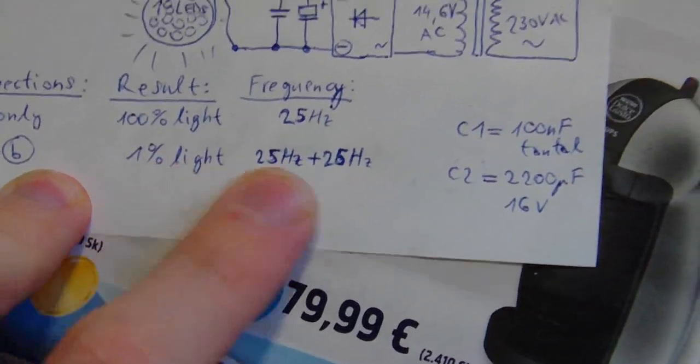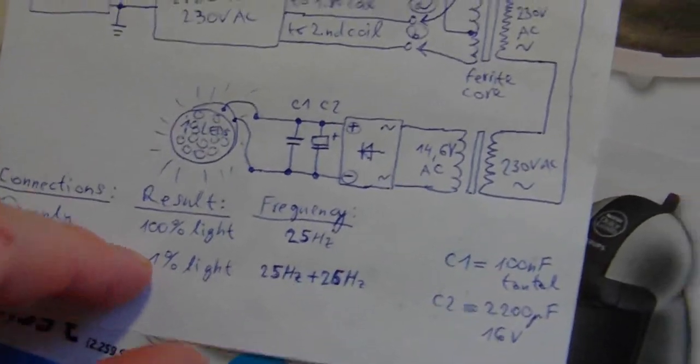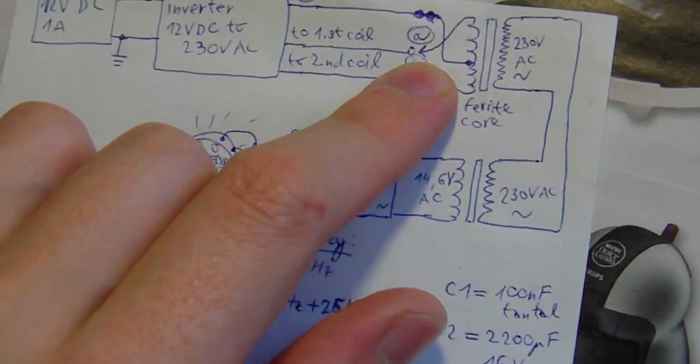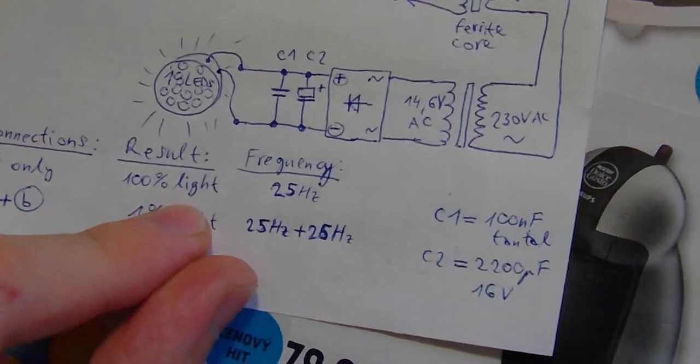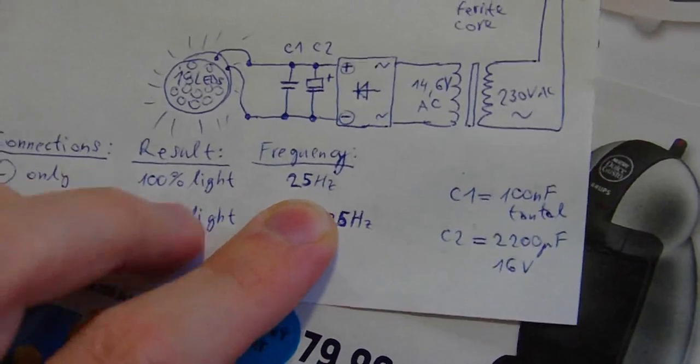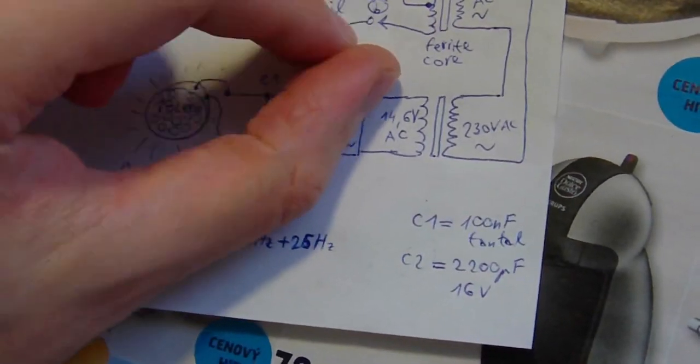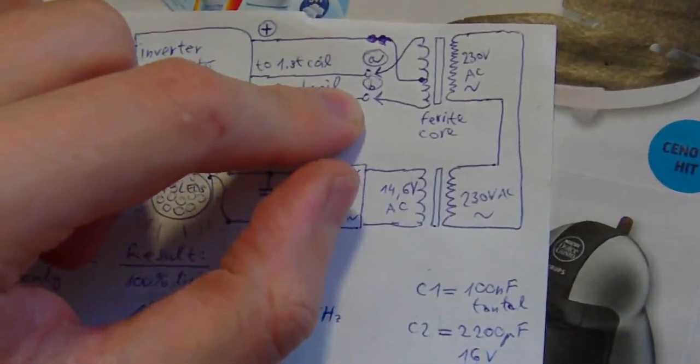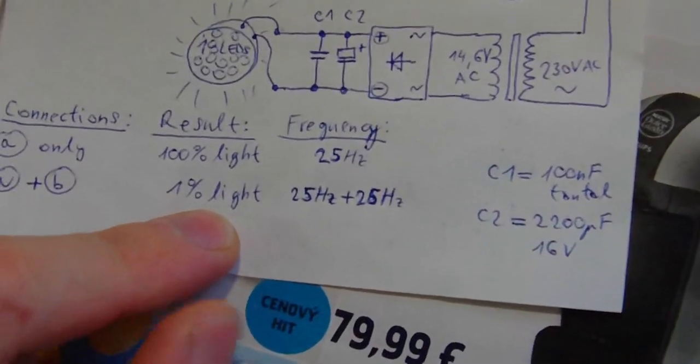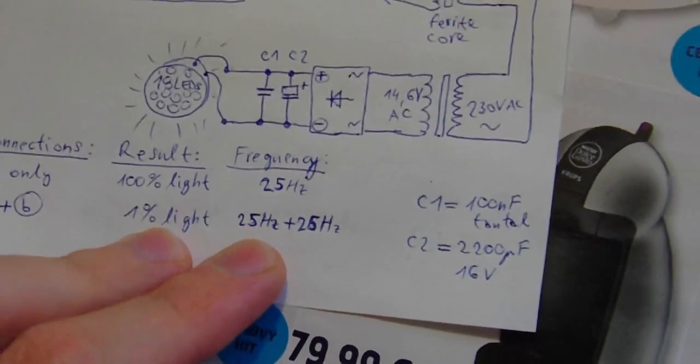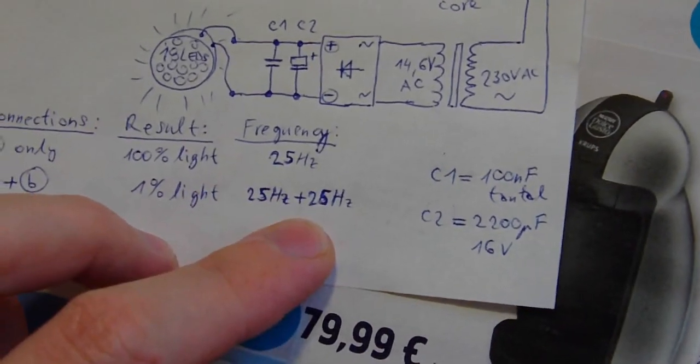Here are results and frequency. If you put only A only here in this connection you get 100% of light but frequency is 25. With all together A and B connection here, we have only one percent light. But frequency is 2x25. It is 50Hz.